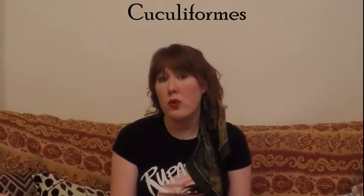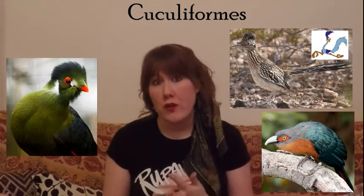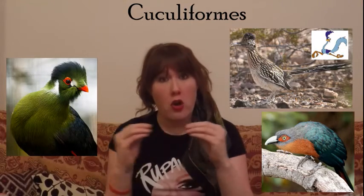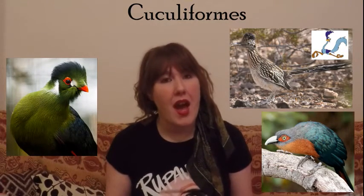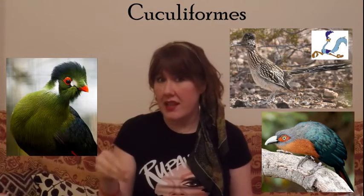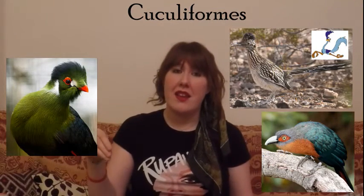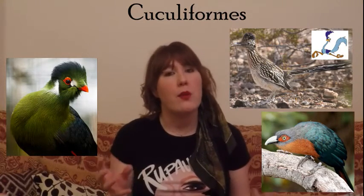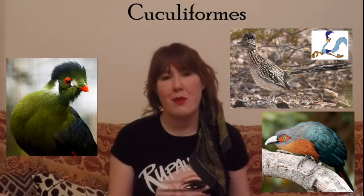Next we have Cuculiformes, and there is a clue in the title — Cuculiformes. So this is cuckoos mostly, roadrunners, and turacos. Anything with a long strong tail and normally a bill that curves down slightly. They are mostly insect eaters and can also be mostly greys and browns in colour. Cuculiformes — cuckoo — easy to remember!